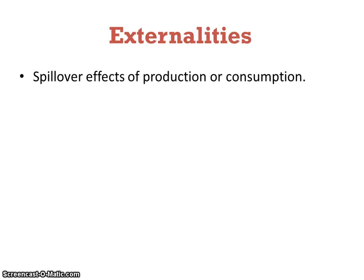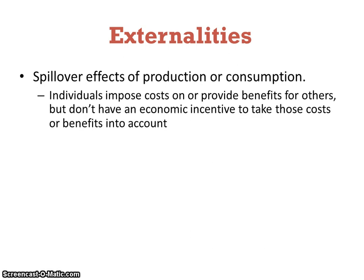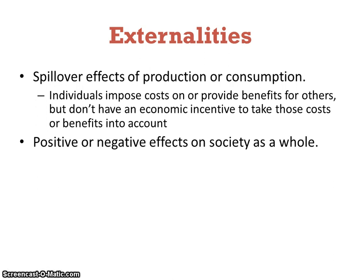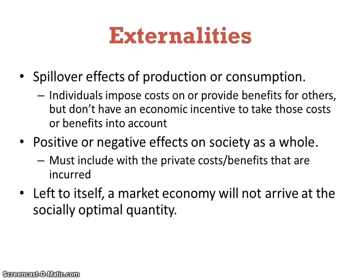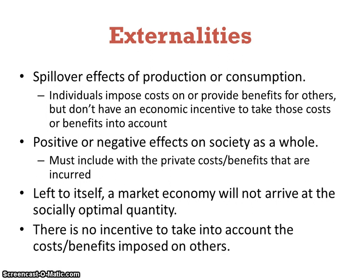Externalities are spillover effects of production or consumption, and this happens in imperfect markets. Individuals impose costs on or provide benefits for others, but don't have an economic incentive to take those costs or benefits into account. Externalities can have positive or negative effects on society as a whole. Left to itself, a market economy will not arrive at the socially optimal quantity of output because some private costs or private benefits are not going to be accounted for.